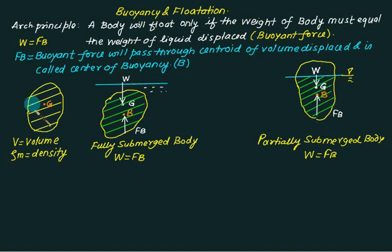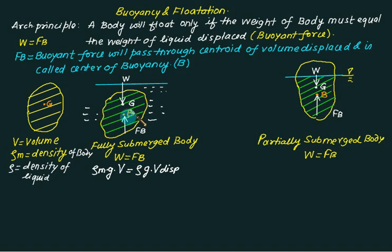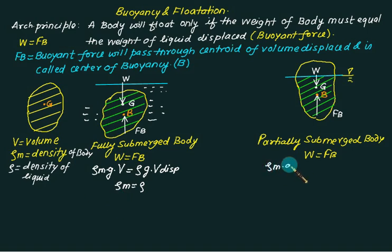These two forces must be collinear for them to cancel each other so the body is in equilibrium. Let ρ be the density of the liquid. Then the weight equation becomes: ρm × g × V = ρ × g × V_displaced. For a fully submerged body, g cancels and the displaced volume equals the total volume, so the density of the material must equal the density of the liquid.